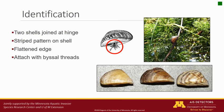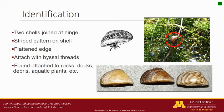They use clusters of tan or black threads to attach themselves to items such as rocks, other mollusks, docks, boats, debris, and even aquatic plants. Zebra mussels can range in size from only a few millimeters as juveniles to as large as about one and a half to two inches as adults. The veligers are free-floating and not visible to the naked eye, so require a very fine mesh plankton net to collect along with a special microscope with cross-polarized lighting to identify.